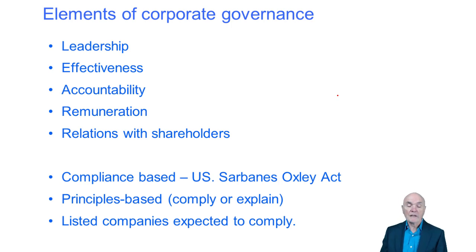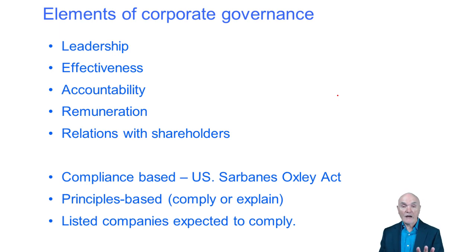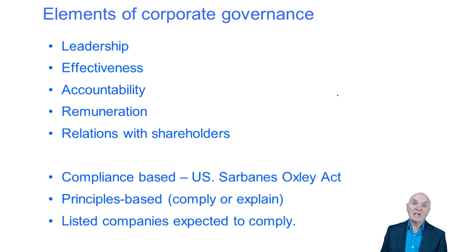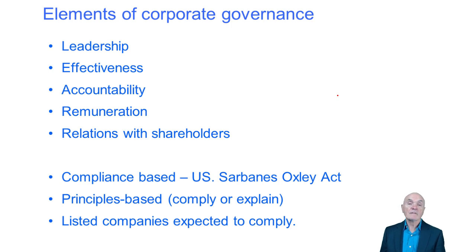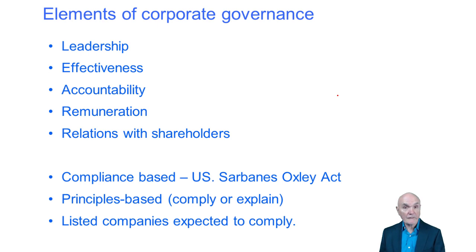The UK Corporate Governance Code breaks corporate governance into five headings. First of all there is leadership — effectively saying that leadership of the company should be by a board of directors who have people of the right quality on it, and that the CEO and the chairman should be separate. We'll talk about that in a moment.